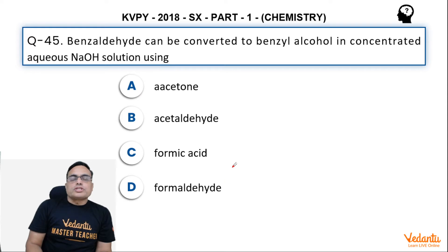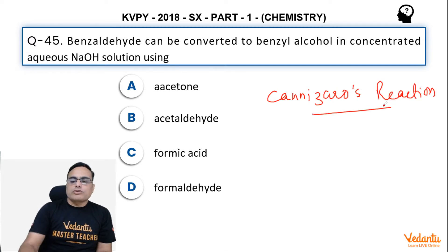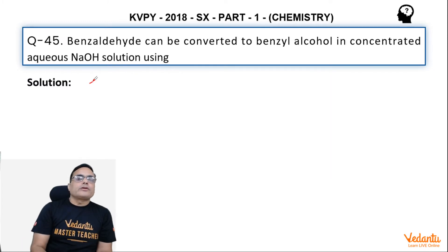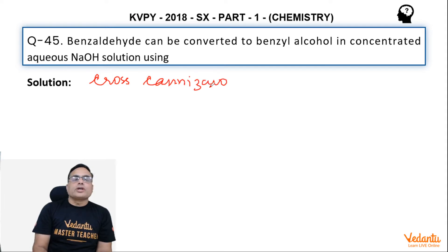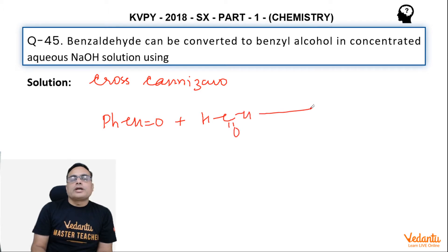This is basically the case of Cannizzaro's reaction — specifically a cross Cannizzaro reaction. In a cross Cannizzaro reaction, we treat any aldehyde without an alpha H, like benzaldehyde, with formaldehyde, which also has no alpha H.